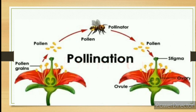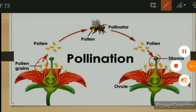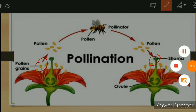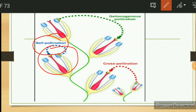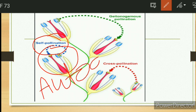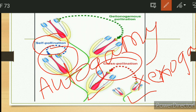Pollination means transfer of pollen grain from anther to stigma. This process is called pollination. Pollination has two main types: self-pollination and cross-pollination. Self-pollination is also called autogamy — this occurs within a single flower. Cross-pollination occurs in a different flower or different plant, and is called xenogamy.